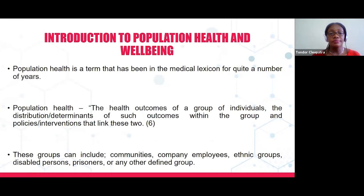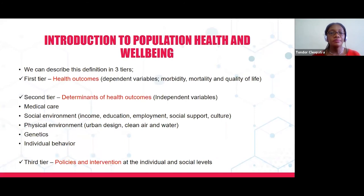Population health is defined as the health outcomes of groups of individuals, the distribution or determinants of such health outcomes within the group, and policies or interventions that link these two. These groups can include communities, company employees, ethnic groups, disabled persons, or any other defined groups. In the definition of population health we have three tiers: health outcomes, the distribution or determinants of health outcomes, and policies and interventions. Health outcomes looks at dependent variables like morbidity, mortality, and quality of life.